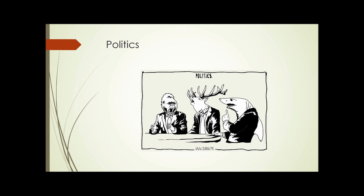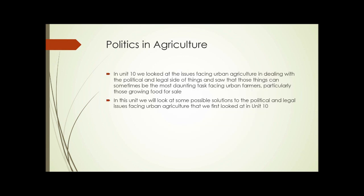Remember back in Unit 10 when we discussed political, legal, and territorial issues? We're going to take a look today at some possible solutions to some of the issues we ran into there. Of all the things facing urban farmers and those interested in urban agriculture in general, dealing with the political and legal side of things can sometimes be the most daunting task. That's especially true of anyone growing food for sale, as opposed to having your own garden or being part of a community garden. In this unit, we'll look at some possible solutions to the issues we first examined in Unit 10.